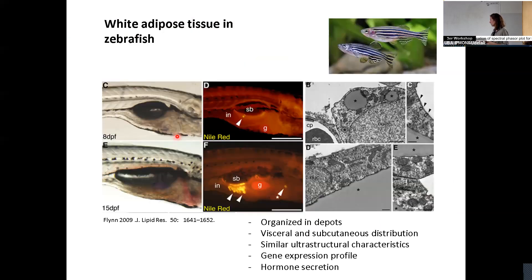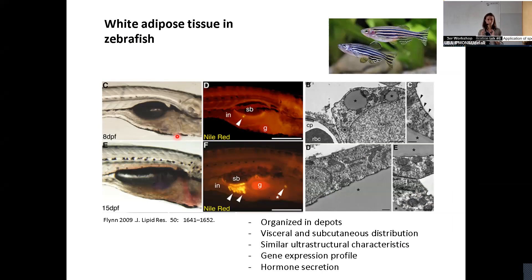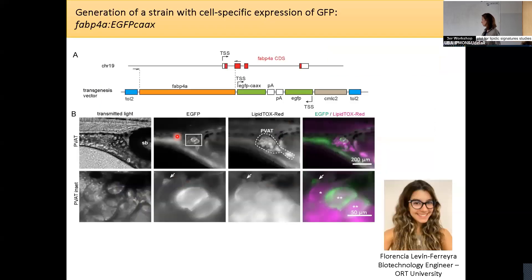One of the problems when I started working with this model was that there were no fish lines developed to label adipocytes. All visualization of adipose tissue relied on lipophilic dyes, so we were only looking at fat, not the whole cell. This meant we were unable to see earlier stages of development where there was no fat accumulation yet. So the idea was to develop a new fish line to label the cell membrane of adipocytes.